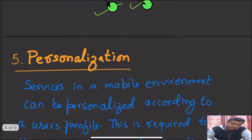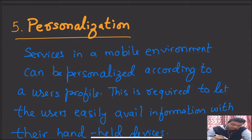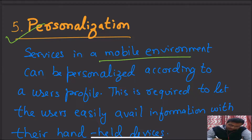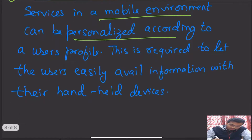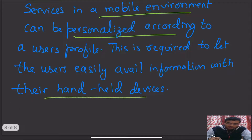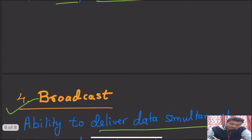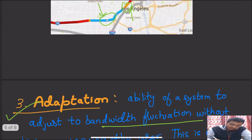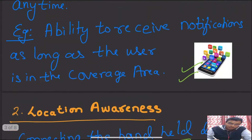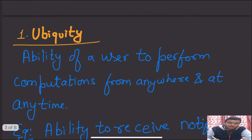Coming to our fifth point, personalization. When we talk of personalization, it means the services in a mobile environment can be personalized according to the user's profile. This is required to let users easily avail information with their handheld devices. This concludes our topic — the five characteristics of mobile computing: ubiquity, location awareness, personalization, adaptability, and broadcast. These are the five main and important characteristics of mobile computing that each one of you should remember.